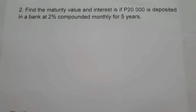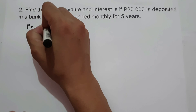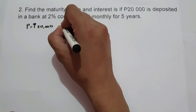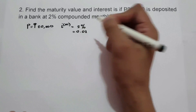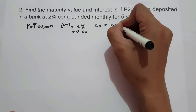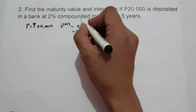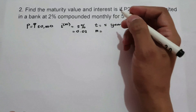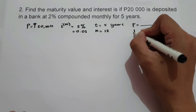On example number two, find the maturity value and interest if 20,000 is deposited in a bank at 2% compounded monthly for 5 years. The given values are: P equals 20,000, nominal rate is 2% or 0.02, time is 5 years, and M equals 12 since there are 12 months in a year.